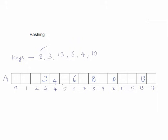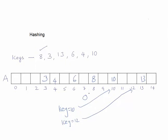When you want to search for any key element, say 10, we directly go to index 10 and see if the element is present or not. If you want to search for key element 12, we directly go to index 12 and check — 12 is not found. So the search time is O(1); we directly go to that index and look for the element.